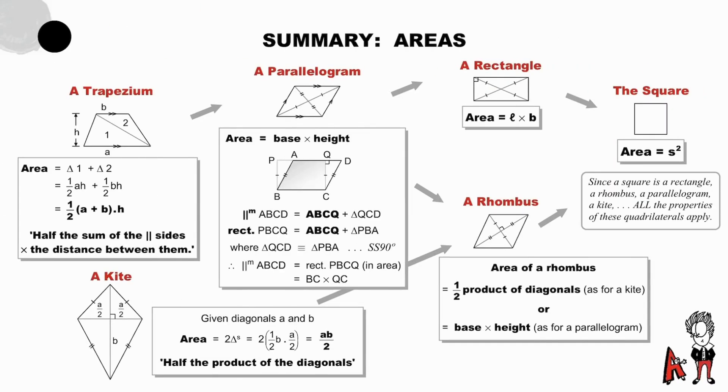Now, a summary of the areas of quadrilaterals. We have already derived a formula for the area of a trapezium and for the kite. And the areas of a parallelogram, a rectangle, and a square are familiar to us. But, the area of a rhombus is particularly interesting. It is both half the product of the diagonals, since the rhombus is actually just a special kite. It is also base times height, as you can see there, because the rhombus is just a special parallelogram. Pause to study these methods, facts, and formulae.